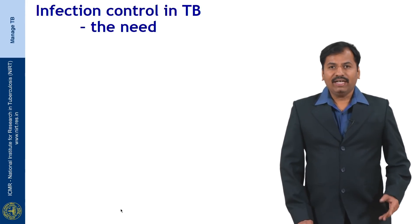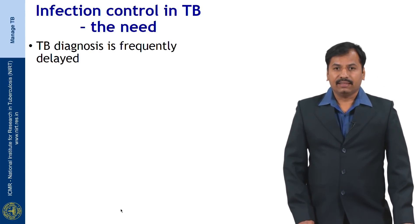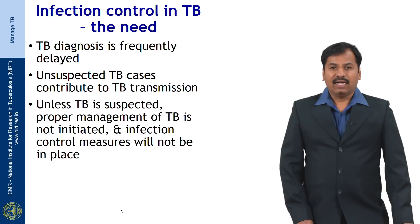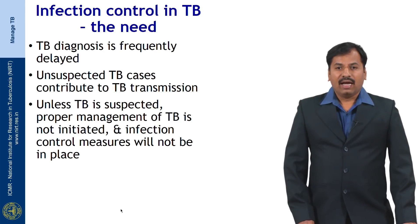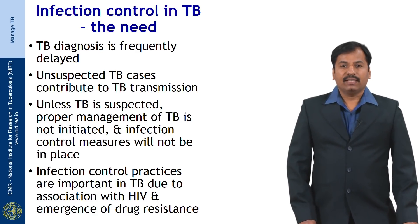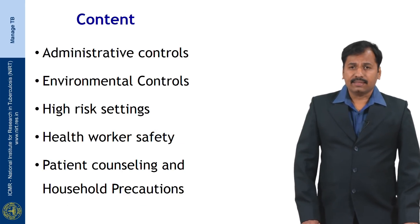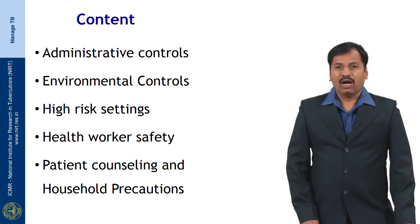Infection control — why do we need it? TB diagnosis is frequently delayed, and unsuspected TB cases contribute a lot to TB transmission. Unless you suspect a TB case and initiate treatment, infection control measures will not be in place. Infection control practices are very important in TB due to its close association with HIV and drug-resistant tuberculosis. In this session I will be talking about administrative control, environmental control, higher settings, health worker safety, patient counseling, and household precautions.